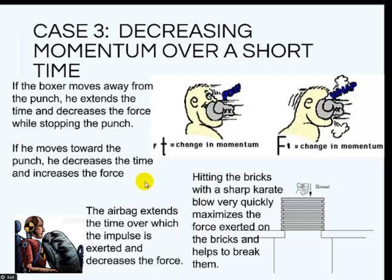So here's an example of decreasing the momentum. If the boxer moves away from the punch, that means riding the punch. Then he's going to have more time in his collision so the force will be smaller. If he moves into the punch, or tightens his muscles and kind of resist that punch, then the collision time will be shorter, but then the force will be much greater. That's going to be applied to his face.